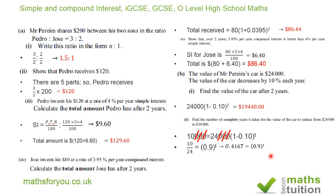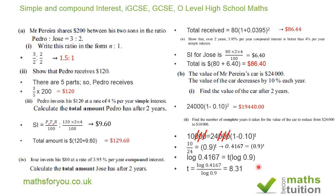Taking the log of both sides and using the rule of logarithms: log of 0.4167 equals T times log of 0.9. Dividing the log of 0.4167 by the log of 0.9 gives T. That gives a value of T equal to 8.31. But because we are looking for complete years, T must be 9.